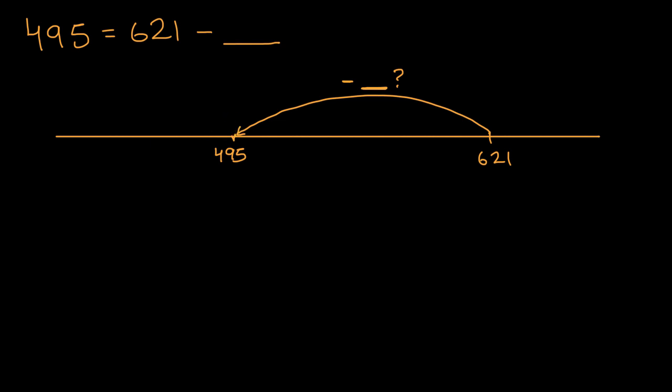Well one way that my brain does it, first we can subtract 21 to get to 600. So let me do minus 21 would get us to 600. Then we could subtract another 100 to get to 500. So minus 100 to get us to 500.